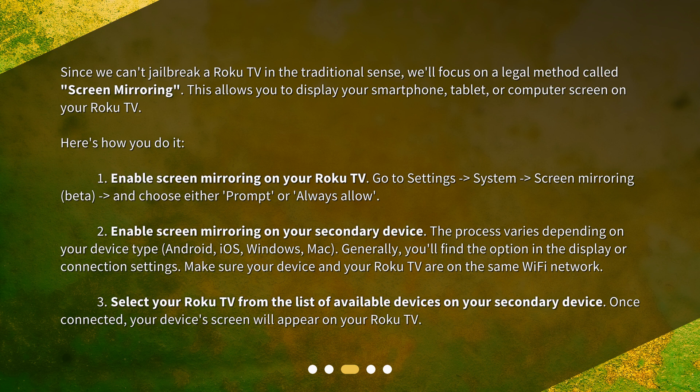Step 1: Enable screen mirroring on your Roku TV. Go to Settings > System > Screen Mirroring (Beta), and choose either Prompt or Always Allow.